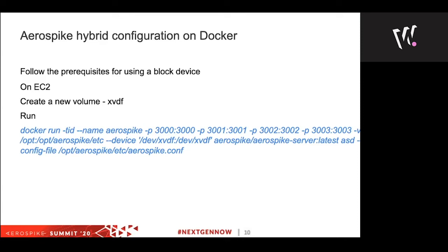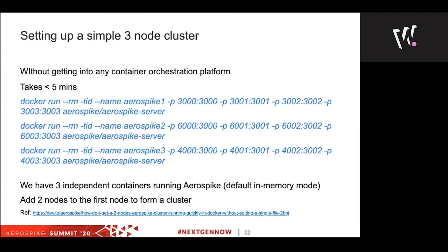So far we started with a simple pure in-memory Docker container setup, then gradually migrated to a slightly more complicated hybrid setup. Now let's see if we can set up a cluster without spending a lot of time. Of course, the moment you talk about cluster, every developer thinks: I have to set up three machines, do a lot of network configurations, and learn Kubernetes or Docker Swarm — which has a very steep learning curve. Absolutely not. We can set up a three-node cluster on a single machine using just containers.